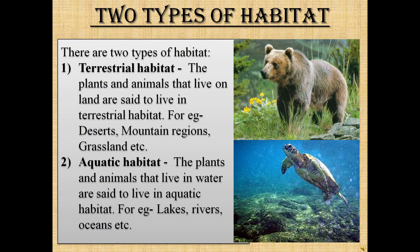There are two types of habitat: terrestrial habitat and aquatic habitat. The plants and animals that live on land are said to live in terrestrial habitat — for example, deserts, mountain regions, grassland, etc. The plants and animals that live in water are said to live in aquatic habitat — for example, lakes, rivers, oceans, etc.